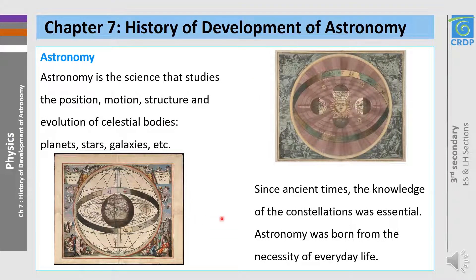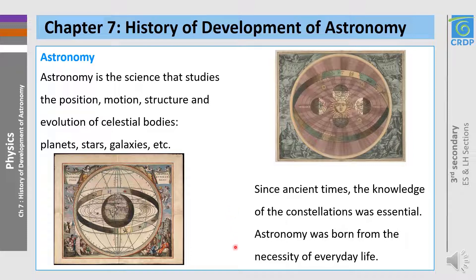Astronomy is the science that studies the position, motion, structure, and evolution of celestial bodies like planets, stars, galaxies, and so on. Since ancient times, the knowledge of the constellations was essential. Astronomy was born from the necessity of everyday life.